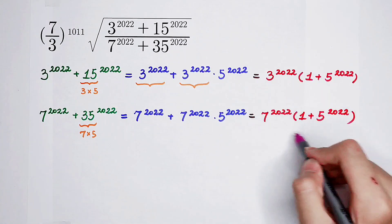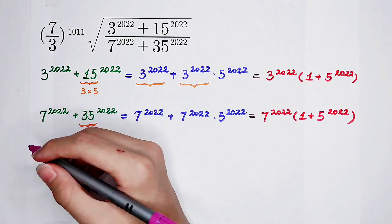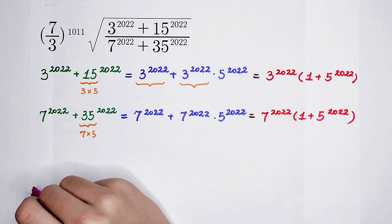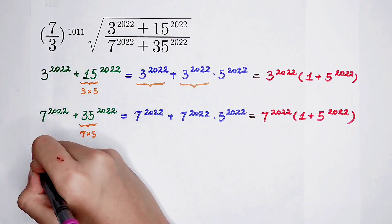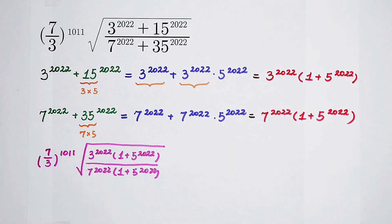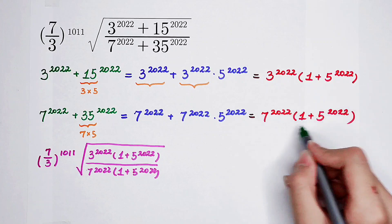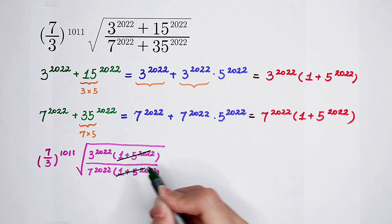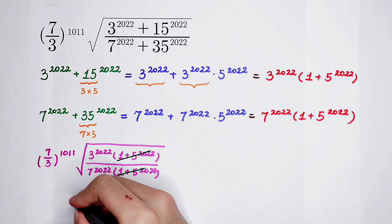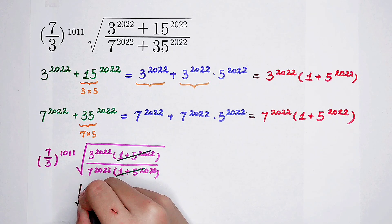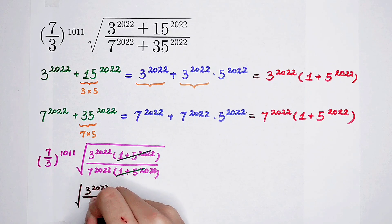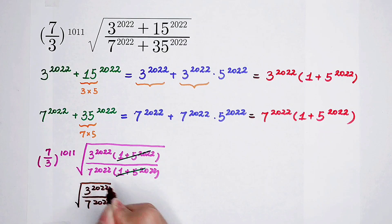Because this is the numerator and this is the denominator, (1 plus 5 to the power of 2022) appears on the numerator and also on the denominator, so cancel. Then here is 3 to the power of 2022 over 7 to the power of 2022, and then square root.